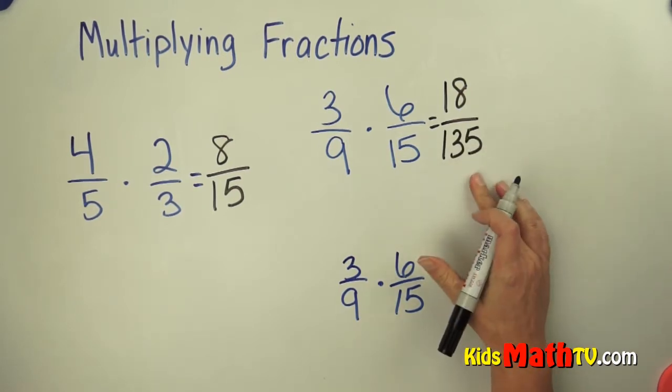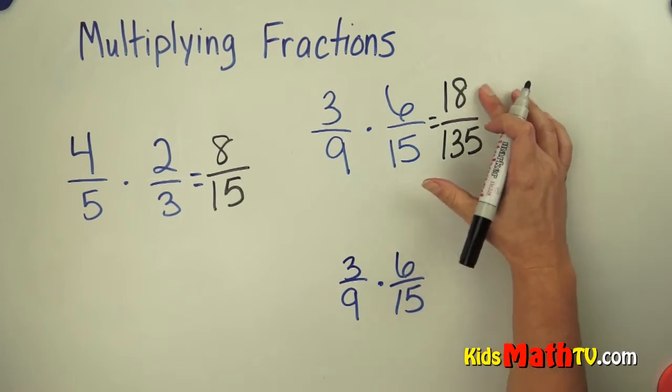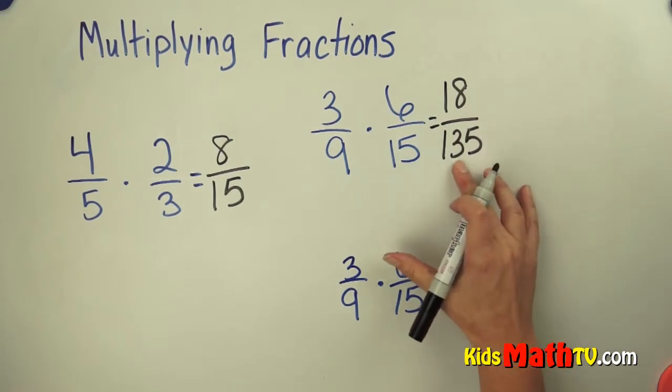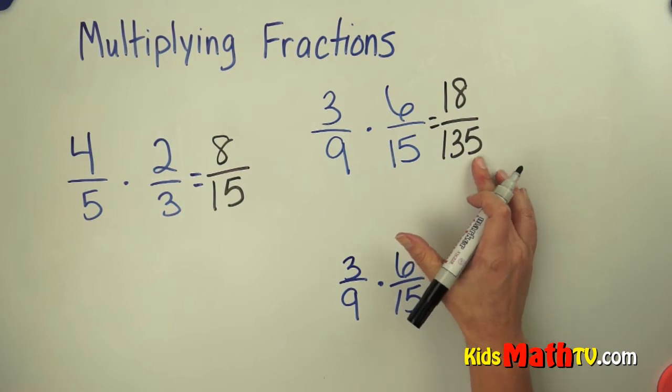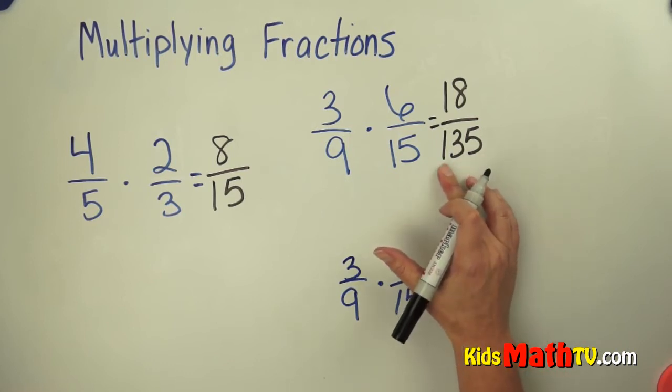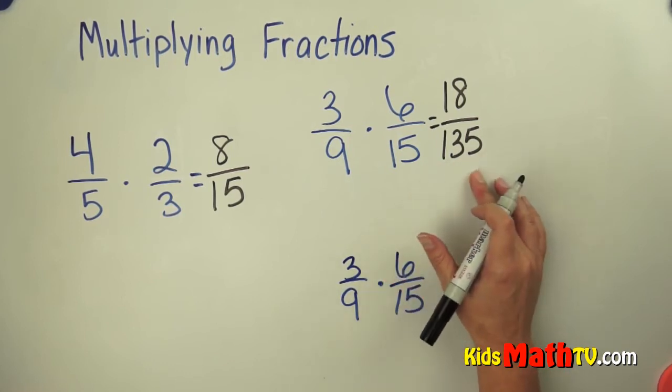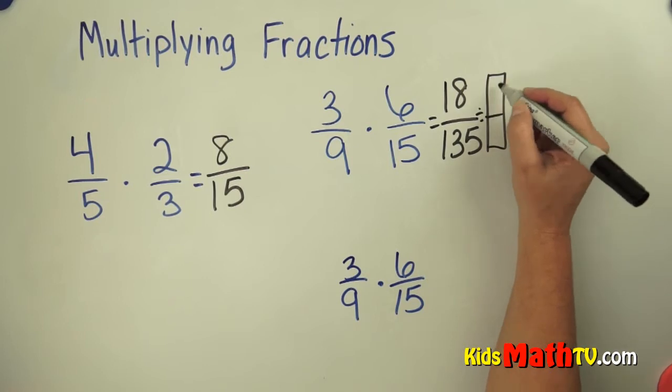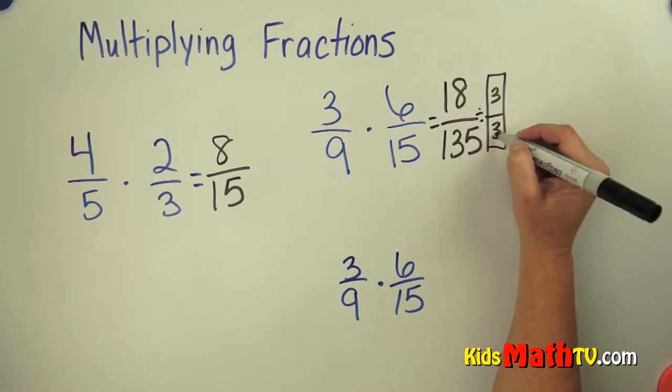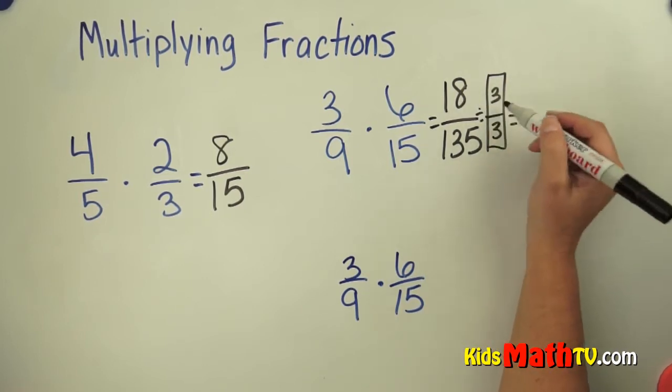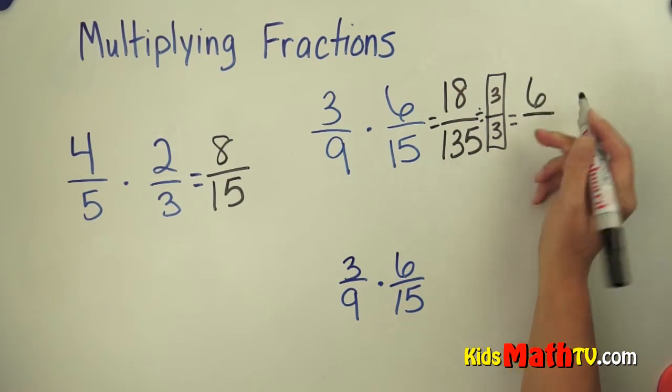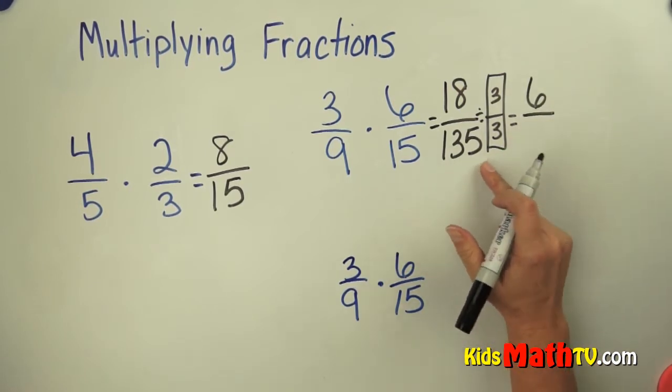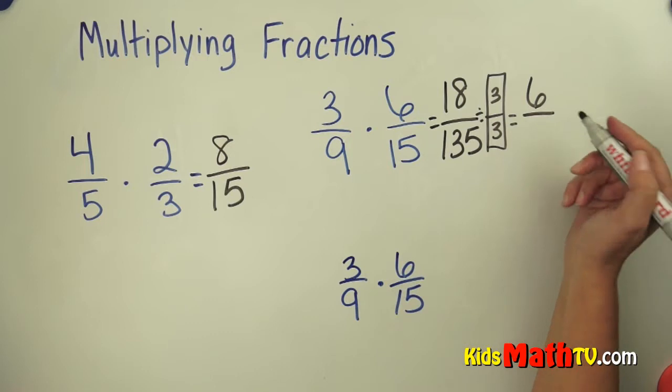Now we have to see if we can reduce this or simplify it. I know that 3 will divide here. If I add these numbers up, 5 plus 3 is 8 plus 1 more is 9. So 9 divides by 3 using our rules of divisibility. So I am going to divide by 3 over 3. And 18 divided by 3 is 6, 135 divided by 3 is 45.